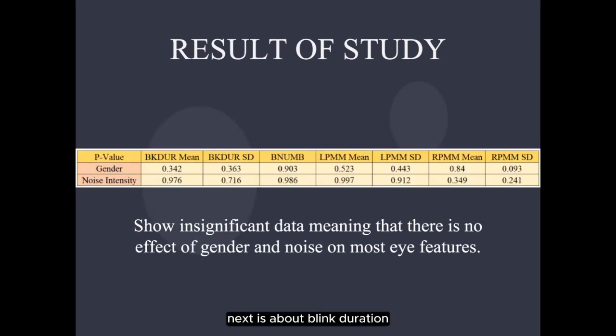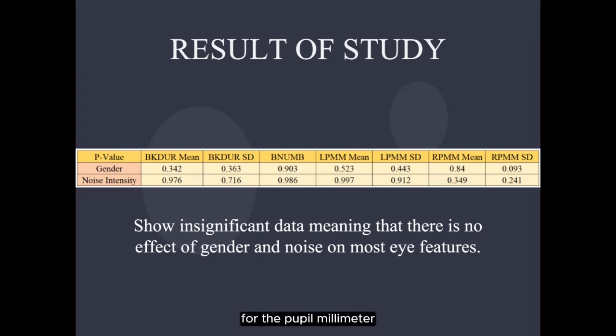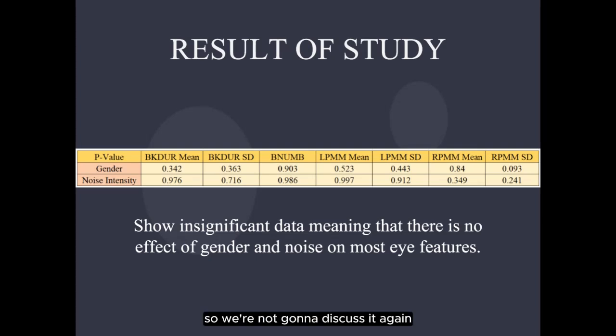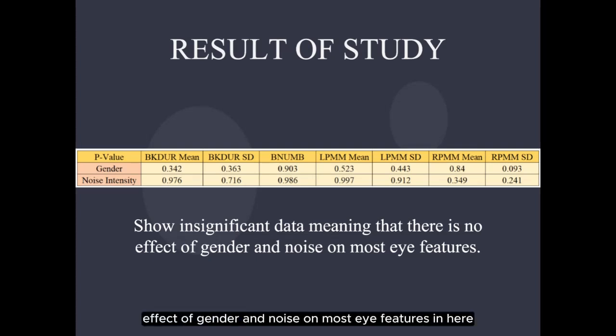Next is about blink duration, blink number, and left and right pupil millimeter. For pupil millimeter, it just changes the unit from diameter to millimeter, so we won't discuss it again. This diagram shows insignificant data, meaning there's no effect of gender and noise on most eye features shown here.